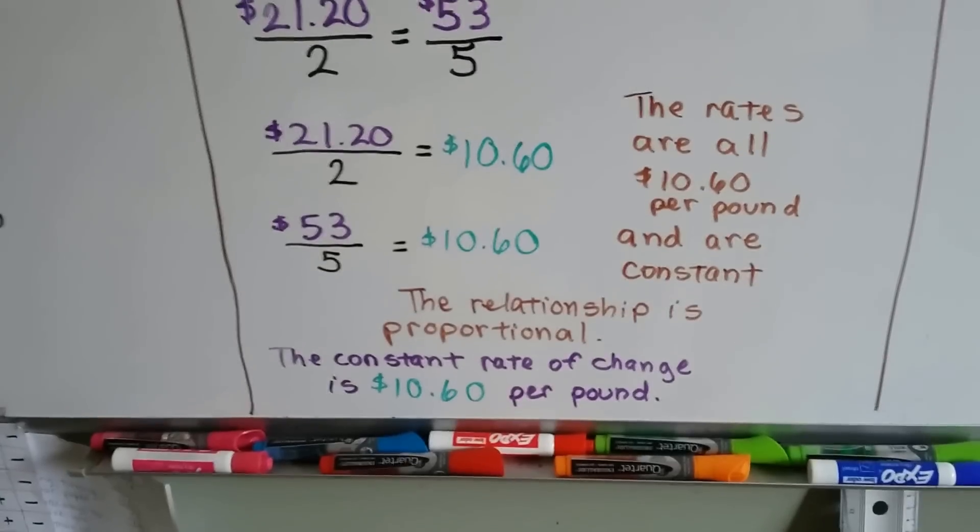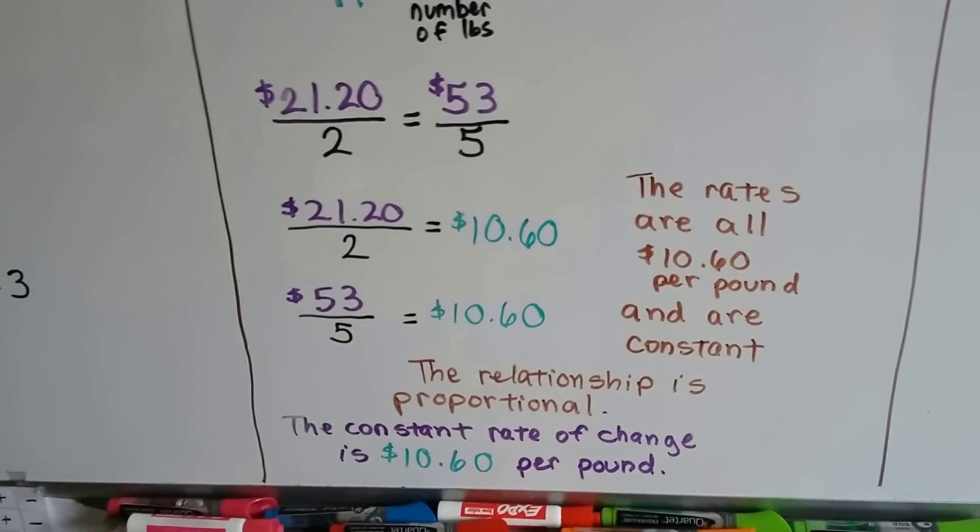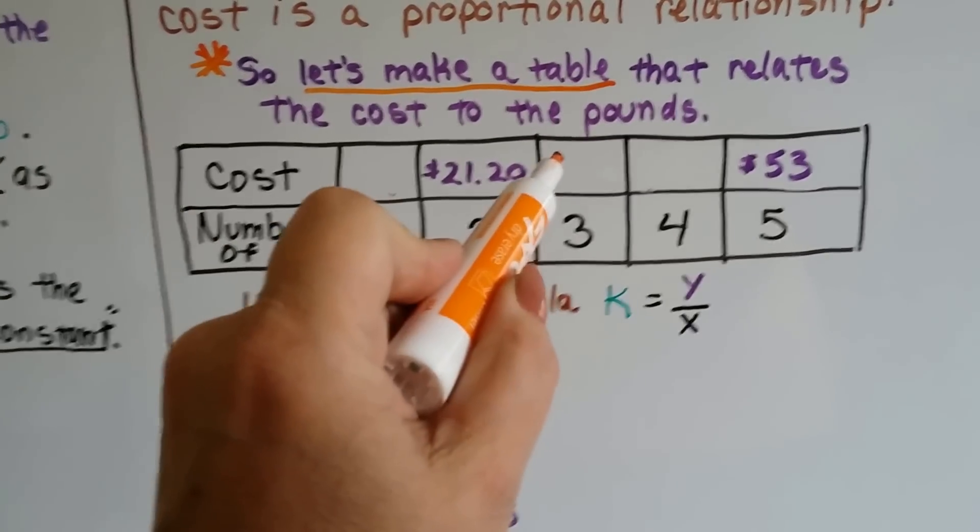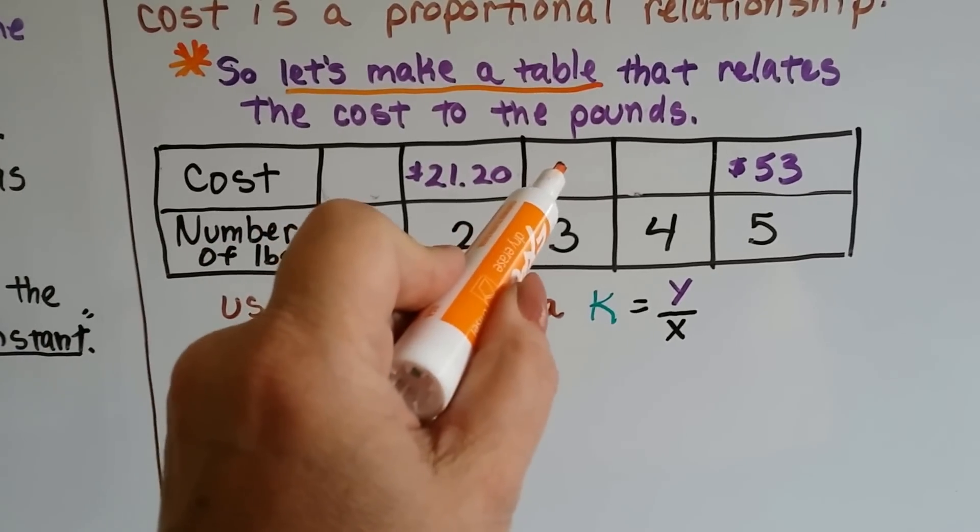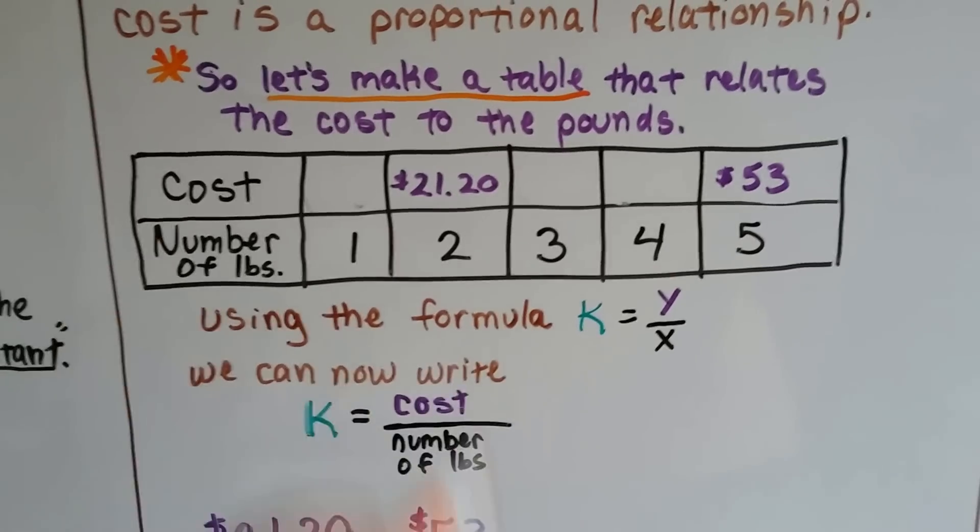The rates are all $10.60 per pound and they're constant. So the relationship is proportional. The constant rate of change is $10.60 per pound. That means I could write 1060 in here and I could multiply 1060 times 3 and put that amount there and 1060 times 4 and put that amount there. I'll be able to complete my table.